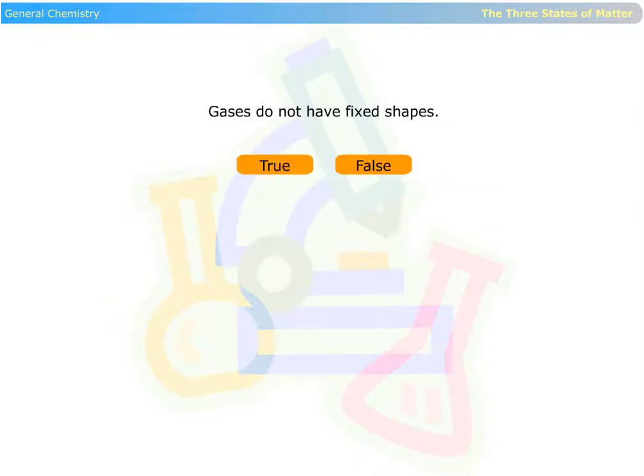True or false. Gases do not have fixed shapes. True. Gases take the shape of the container they are in.